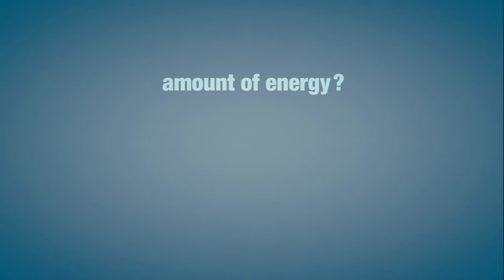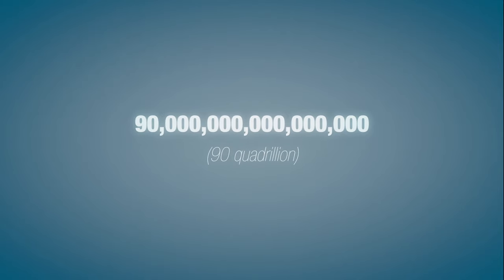Einstein discovered that the amount of energy is determined by multiplying the mass by the speed of light squared. The speed of light, of course, is 300 million meters per second. So we multiply the really small difference in mass by 90 quadrillion.